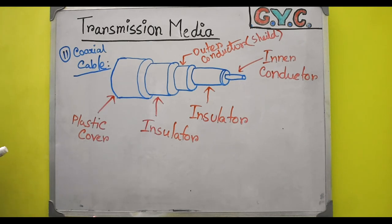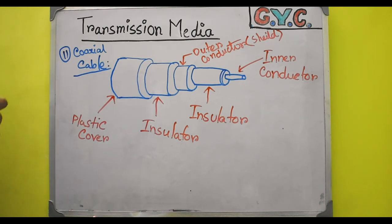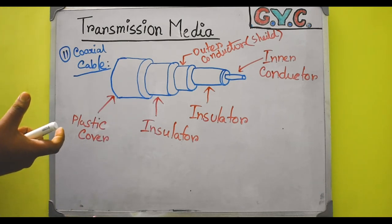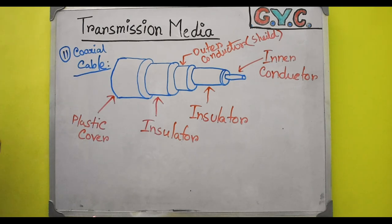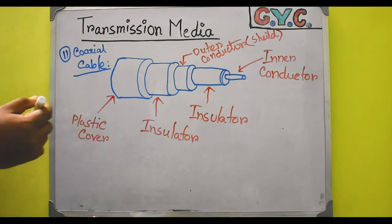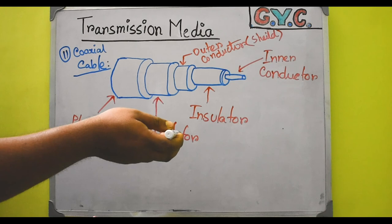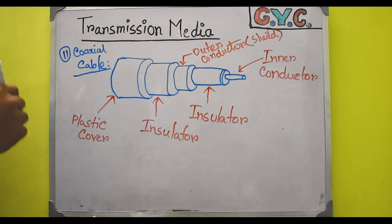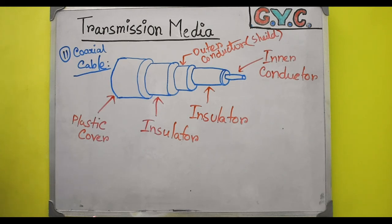In coaxial cable there is very little chance of external noise, very little chance of collisions or interruptions, so the receiver will receive the actual message successfully. This is the coaxial cable — designed to remove the use of two wires. Now we will shift to fiber optic cable in our next video.